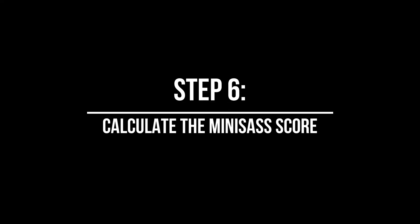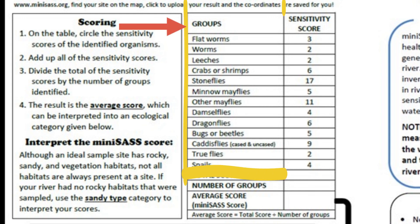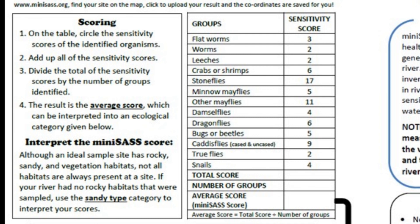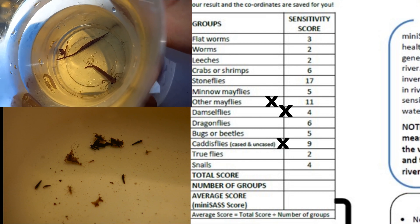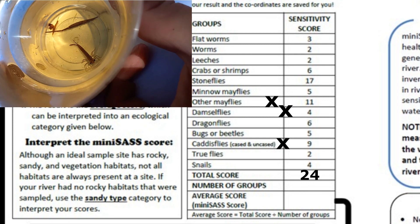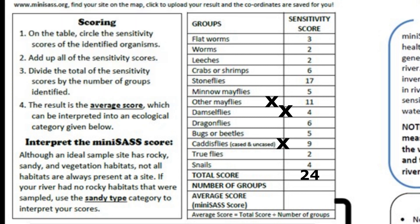Step 6: Calculate the Mini-SASS value. When you have identified all the specimens down to their groups and marked them on your data recording sheet, tally up the sensitivity scores given to each of the groups recorded. The sensitivity scores are higher for invertebrate groups that are more susceptible to environmental degradation and lower for those groups that are generally tolerant of degraded environments. During our survey, we found specimens in the other mayflies group as well as specimens in the caddisflies and the damselflies group. Tallying up 11, 4 and 9 gives us a total of 24. We now record the number of groups we recorded — in this case, 3 groups.